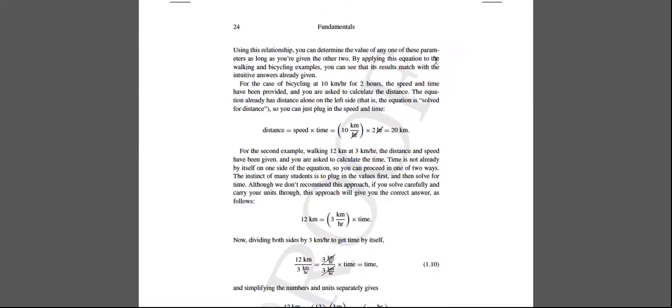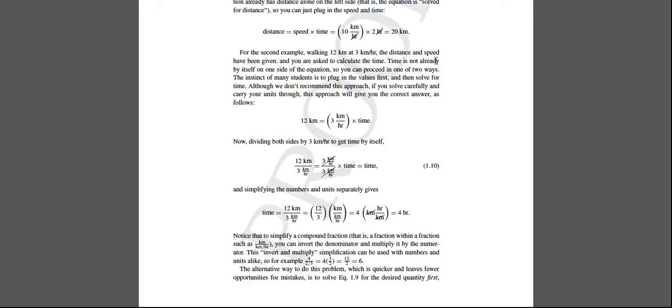There's an example of this given on the next page. You're given a distance of 12 kilometers and a speed of 3 kilometers per hour, and you're asked to find the time. We show two different ways of doing this. In the first way, we simply plug in the numbers: 12 kilometers and 3 kilometers per hour, and we get a time of 4 hours. You can see this in equation 1.10.